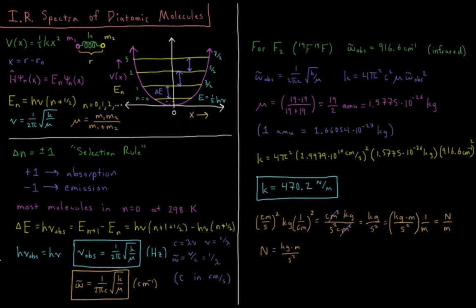When delta n equals minus one, our final state is lower in energy than our initial state, and we have decreased by one quantum of energy by emitting a photon, so that has emission.